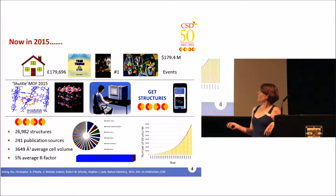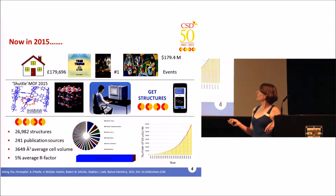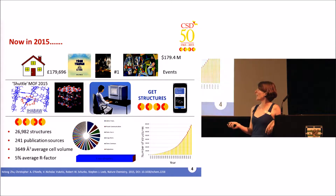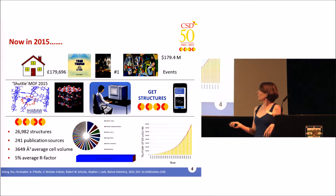Back in crystallography today, there have been nearly 27,000 structures published this year already, from a much bigger set of 241 publication sources. No single journal dominates anymore — it's spread over the top journals more widely. The average cell volume has more than doubled since 1965, and the average R factor has decreased by over half. Thankfully, in the era of electronic data, we're getting coordinates for virtually all structures in the CSD.